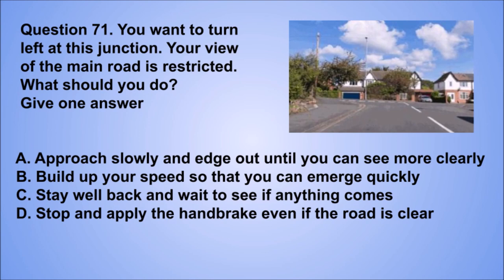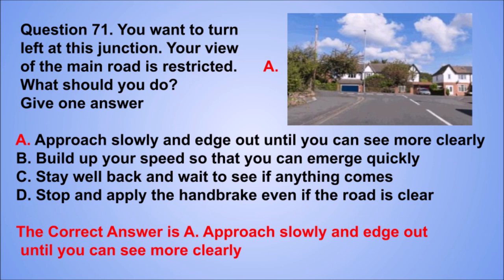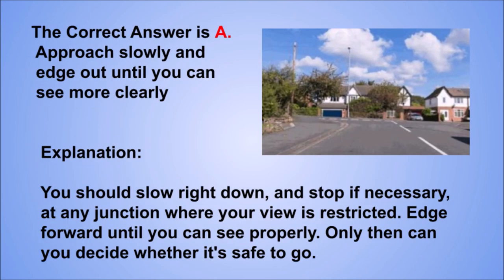Question 71. You want to turn left at this junction. Your view of the main road is restricted. What should you do? Give one answer. A. Approach slowly and edge out until you can see more clearly. B. Build up your speed so that you can emerge quickly. C. Stay well back and wait to see if anything comes. D. Stop and apply the handbrake even if the road is clear. The correct answer is A, approach slowly and edge out until you can see more clearly. You should slow right down, and stop if necessary, at any junction where your view is restricted. Edge forward until you can see properly. Only then can you decide whether it's safe to go.